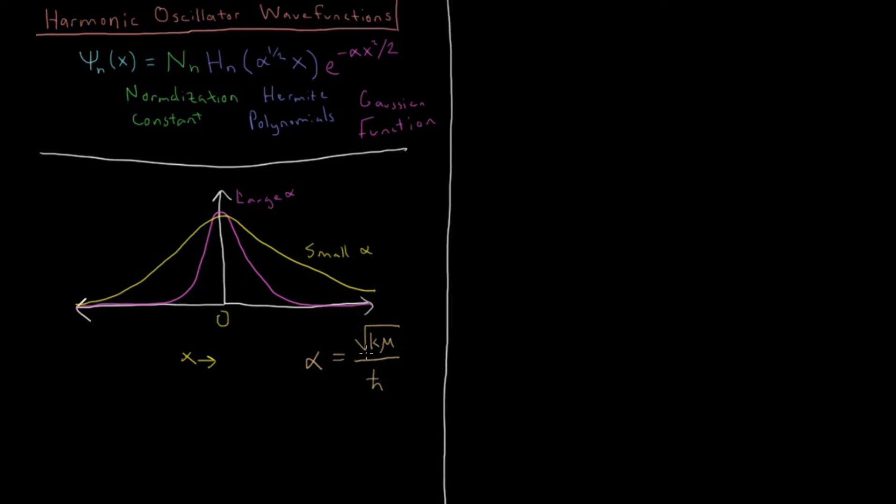So as the potential gets stiffer and stiffer, gets very, very high very quickly, we're going to get a larger value of alpha. And that makes sense because the particle's going to be much more contracted if the potential is squeezing it into a smaller area.